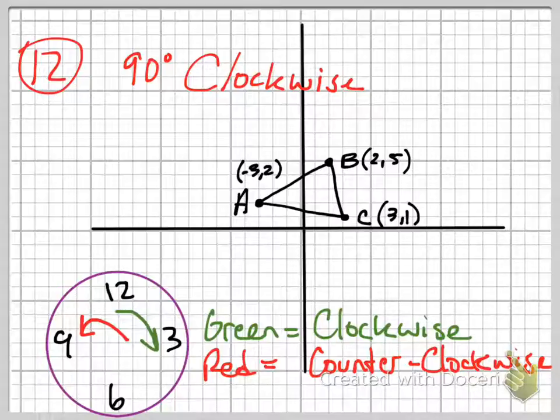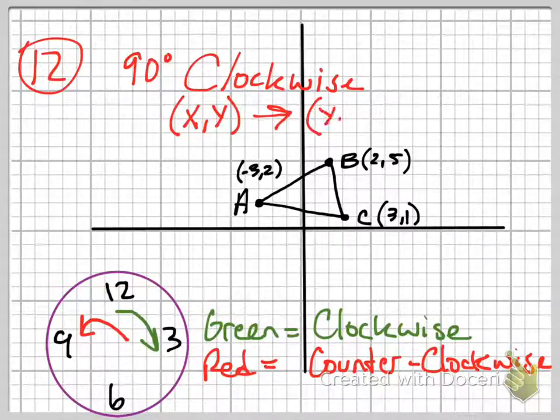And so 90 degrees clockwise has a formula, if you will, that changes all the points of my shape and will help us convert it easily. Now, you could look at this and say, I can rotate it myself and guess where 90 degrees is. But there's a mathematical way to do it. And the mathematical way to do it is by knowing the formula, which is (x,y) changes to (y, -x).